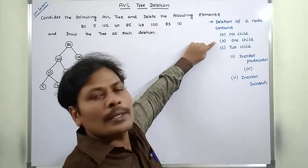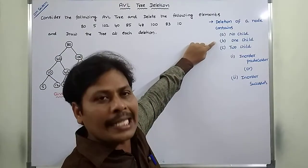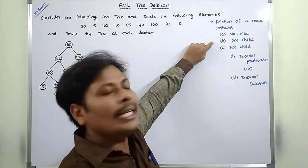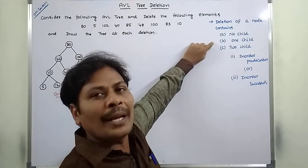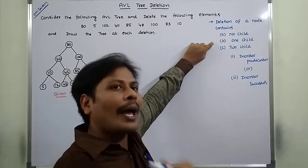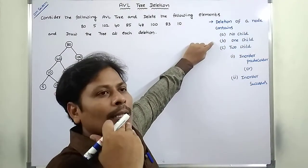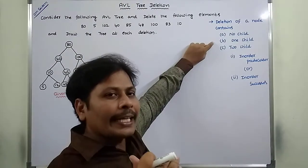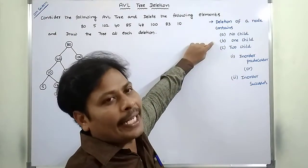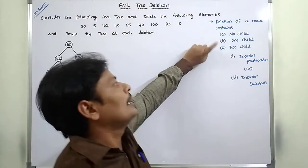Next, suppose the deleted node has one child. That child is simply removed. If it also has a child, that child can be added to the parent of the deleted node.